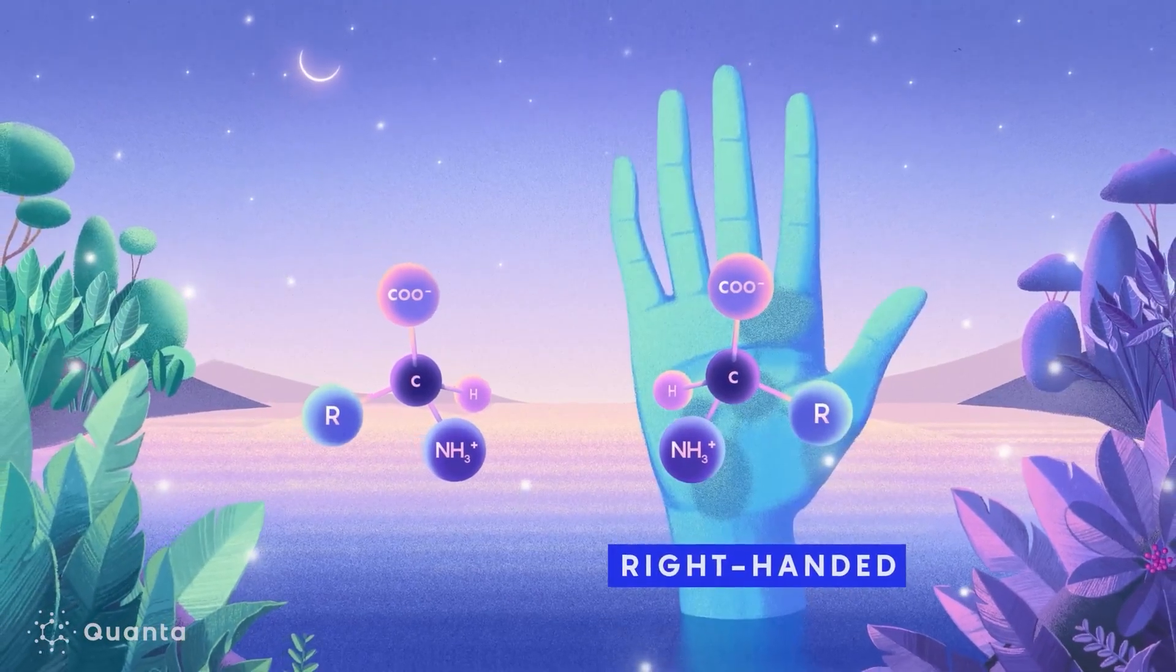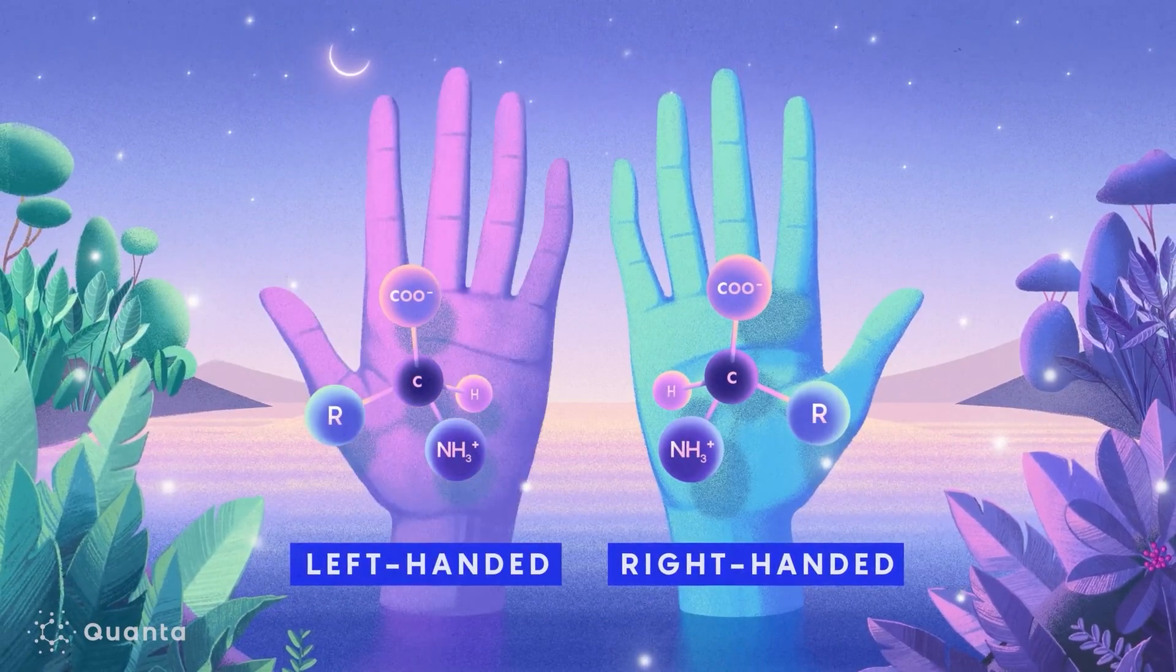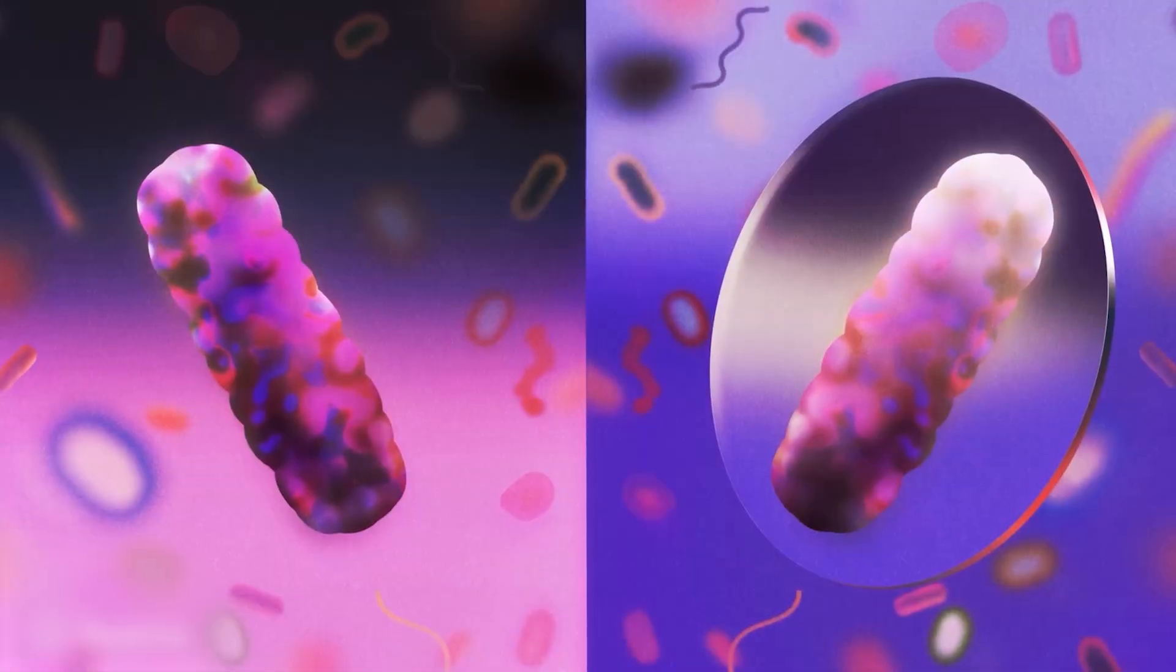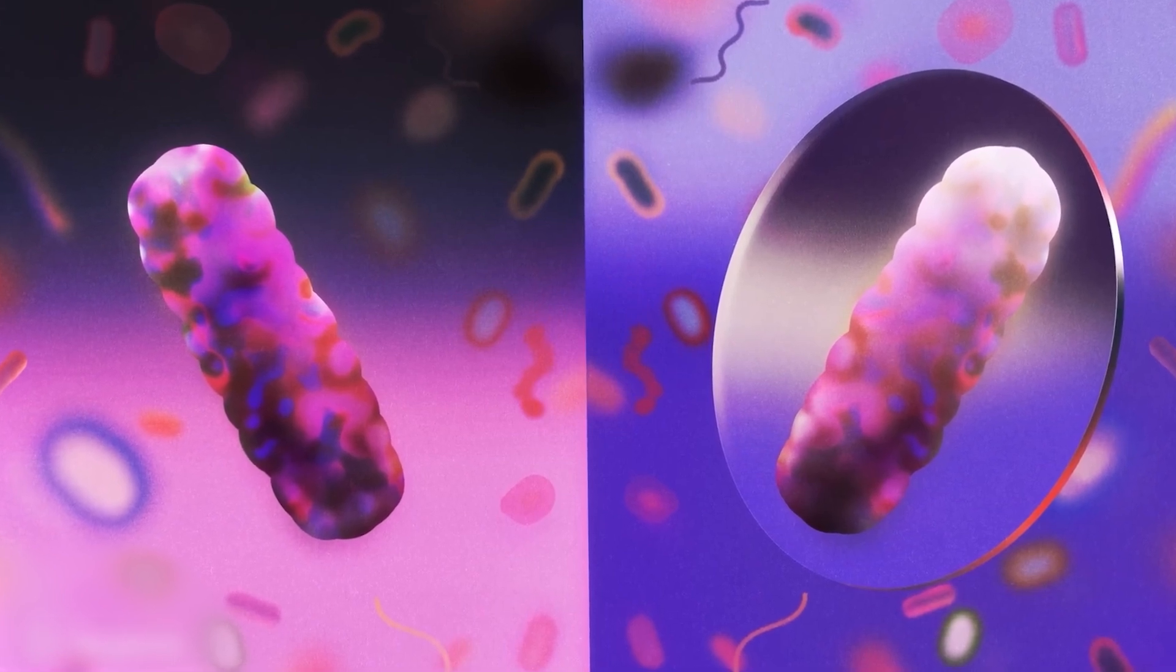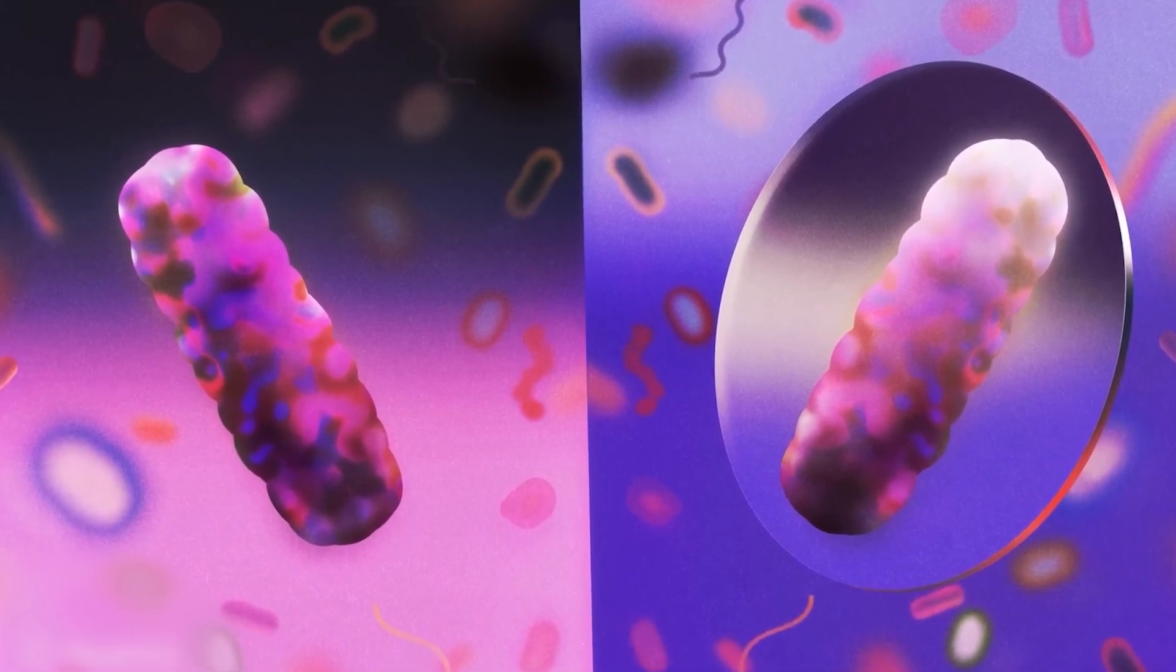Twist one clockwise, and it collapses inward. Twist the other the same way, and it might bulge outward. This mirrored relationship creates a kind of mechanical tension. What happens to one affects the other.